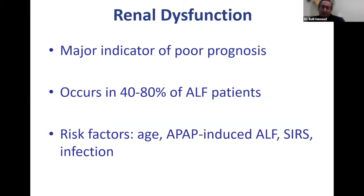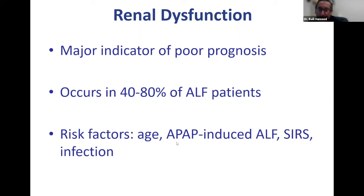Kidney dysfunction is a major indicator of poor prognosis. Risk factors for renal dysfunction include older age, acetaminophen-induced acute liver failure, sepsis or underlying infection. If a patient with acute liver failure also develops renal failure, they are unlikely to do well and will likely need a liver transplant.